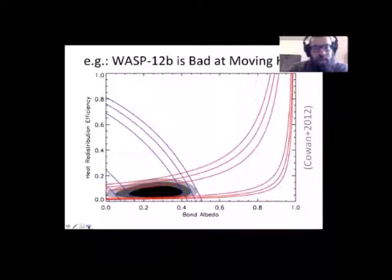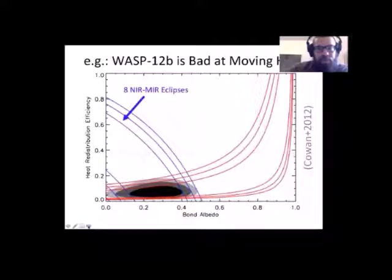The two axes here are the bond albedo, which is just how reflective the planet is, and the heat redistribution efficiency, which is how well the planet can move energy from the day side to the night side. The point is that if you have day-side measurements, you get these blue contours, and you know that the planet must live somewhere in this swath at one, two, and three sigma confidence.